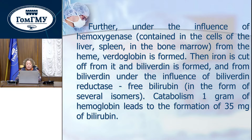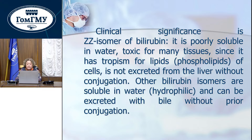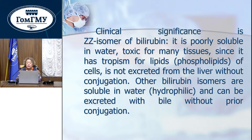Catabolism of 1 gram of hemoglobin leads to formation of about 35 mg of bilirubin. The clinically significant isomer of bilirubin is poorly soluble in water and toxic for many tissues, since it has an affinity to lipids, especially phospholipids of cells. It cannot be excreted by the liver without conjugation. Other bilirubin isomers are soluble in water — they are heterophilic and hydrophilic — and can be excreted with bile without prior conjugation.